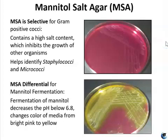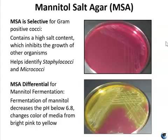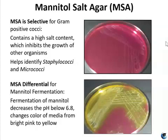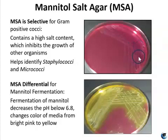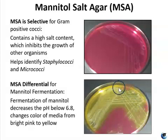Finally, we have MSA — mannitol salt agar. Mannitol salt agar is selective for gram-positive cocci specifically, and it also has a high salt content which inhibits the growth of many organisms. So MSA is your most selective media because it selects not only for gram-positive bacteria, but specifically cocci and also halo-tolerant cocci. MSA is routinely used to help identify staphylococci and micrococci. It is also differential for mannitol fermentation — fermentation of mannitol decreases the pH below 6.8 and changes the color of the media from a reddish-pink to a bright yellow. Often the media around the bacteria also turns yellow, so it's usually easy to read a positive MSA plate.